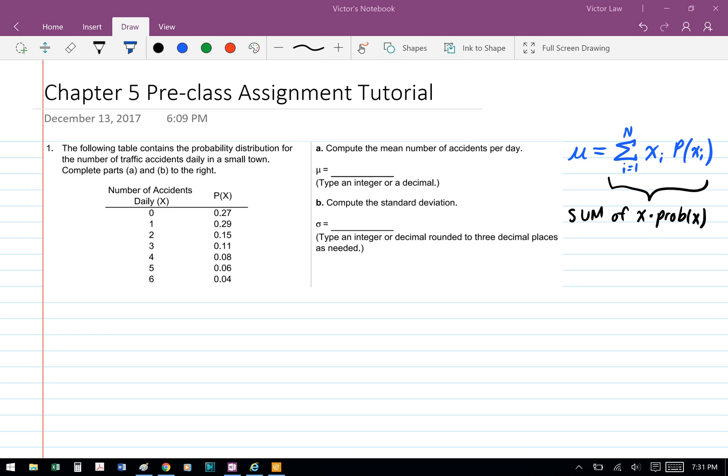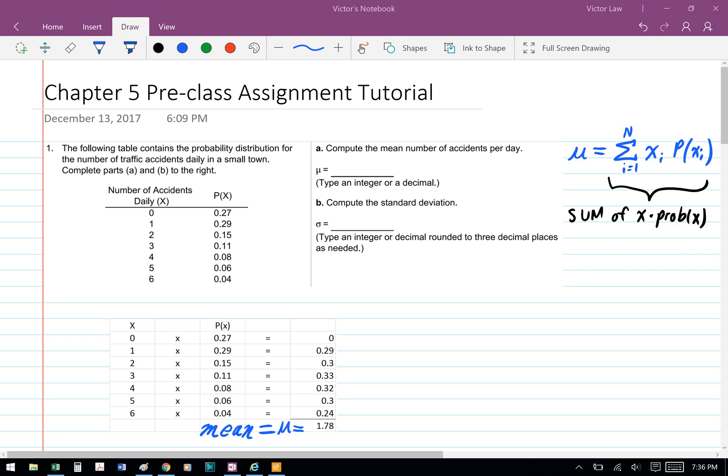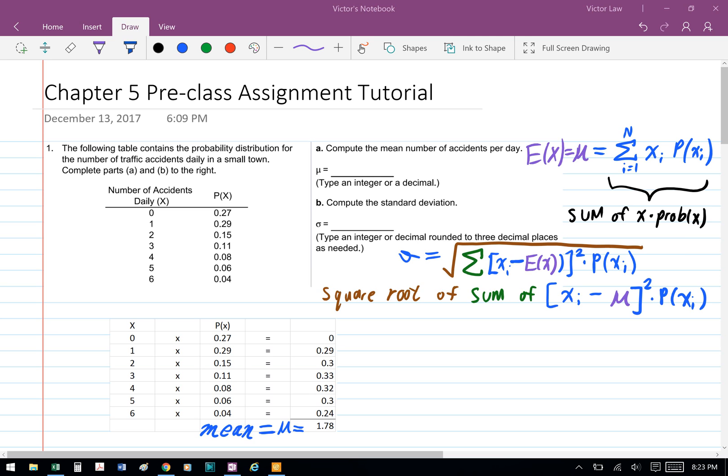Part A: To compute the mean number of accidents per day, we're going to use the summation formula of x times probability of x itself. So basically we're going to times each of the x variables by its probability, and then we're going to add them up to get the mean.